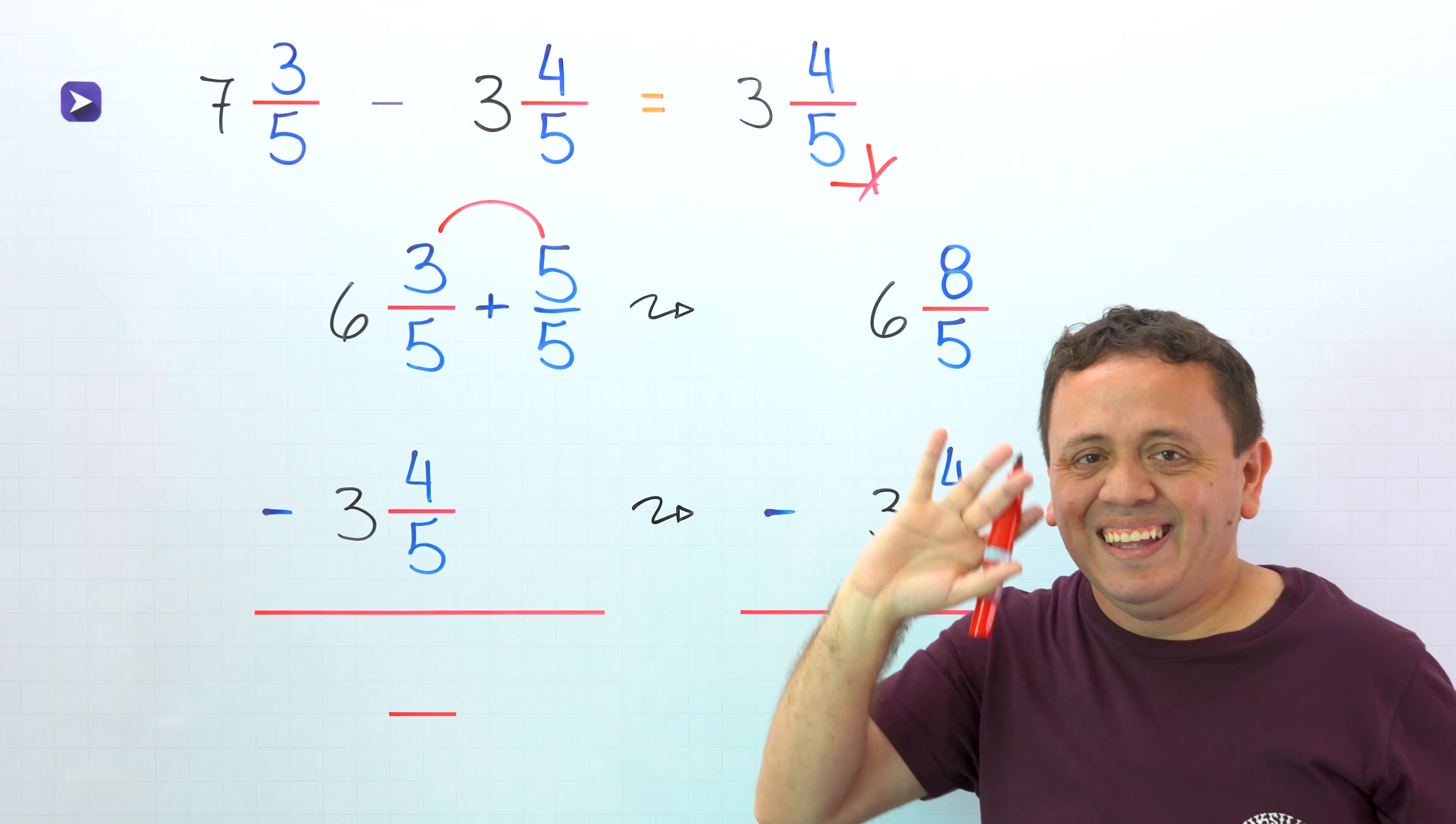However, the 1 is going to be in the column of the fractions. Now we're going to rewrite 1 as an equivalent fraction with denominator 5. So instead of writing 1, we're going to write 5 fifths. Don't forget that we can also see a fraction as a division, and 5 divided by 5 gives us 1.